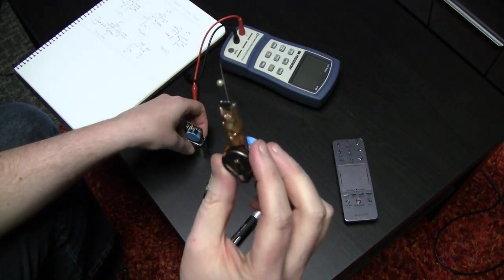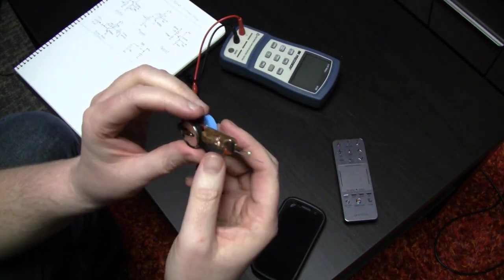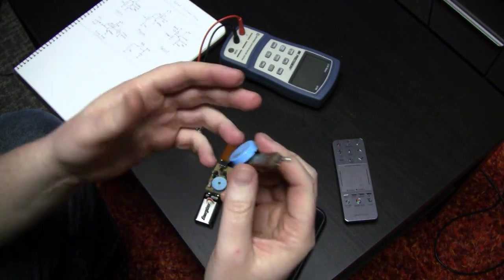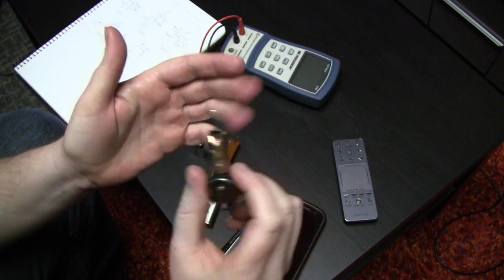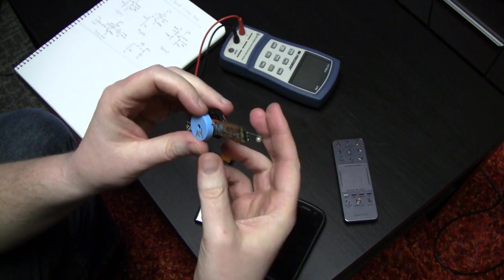Another thing we used this for was the Christmas tree dead bulb locator project last year. It's just a FET probe that picks up changing electric fields. If you put it near a mains cable it'll pick up the hash on it, and you can go along until you find where the break in the set of Christmas lights was.